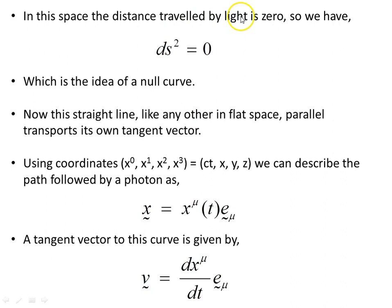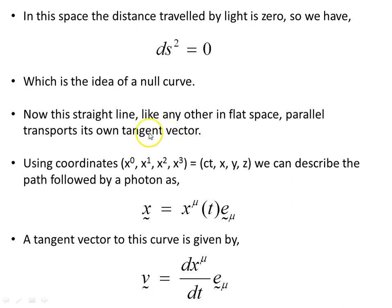In this space the distance travelled by light is zero, so ds² equals zero. This is the idea of a null curve. Now, if you think back to the plot earlier — that straight line, like any other in flat space, parallel transports its own tangent vector. The tangent to that straight line is just a line parallel to itself, and so it parallel transports its own tangent vector.